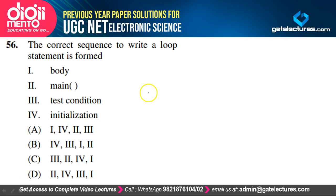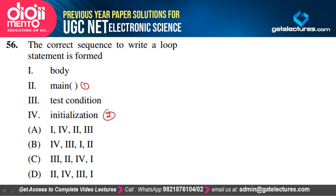Correct sequence to write a loop statement: first, initialization; second, test condition; third, body of the loop; fourth, increment/main body. Option D satisfies our explanation.